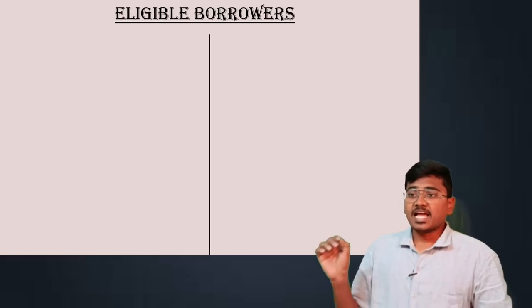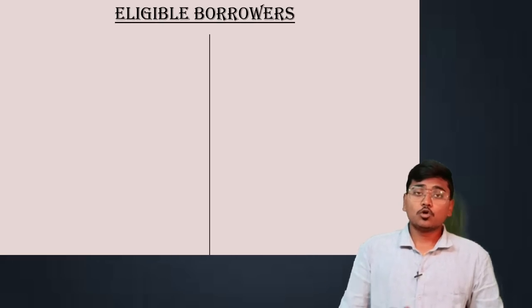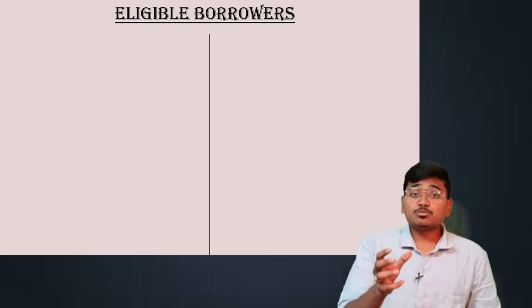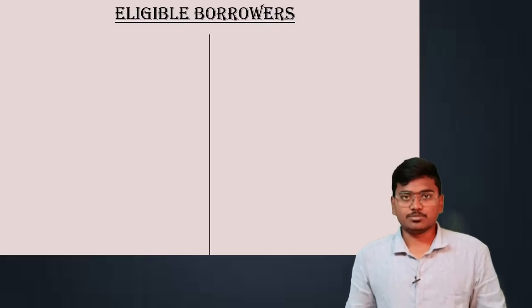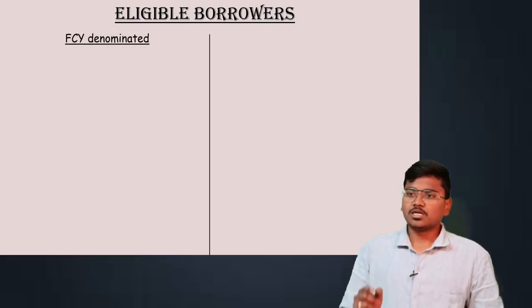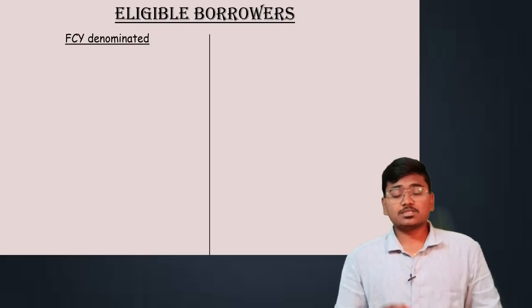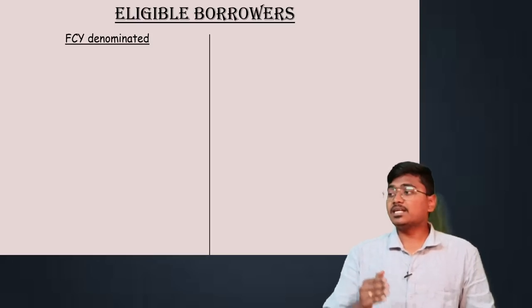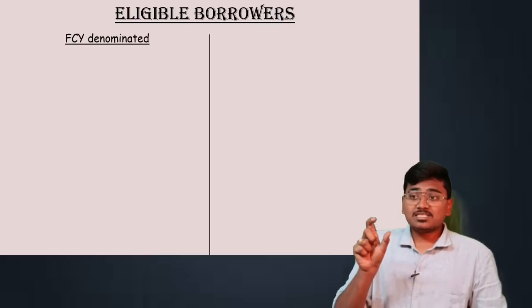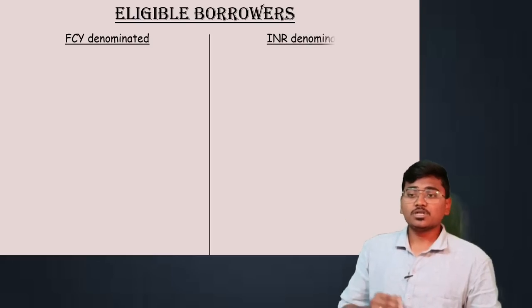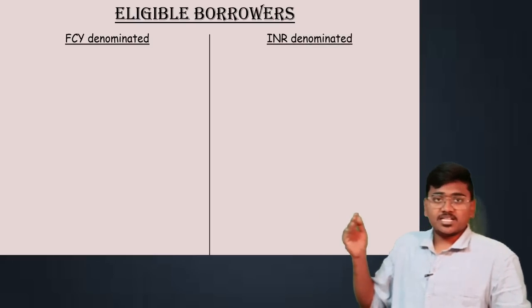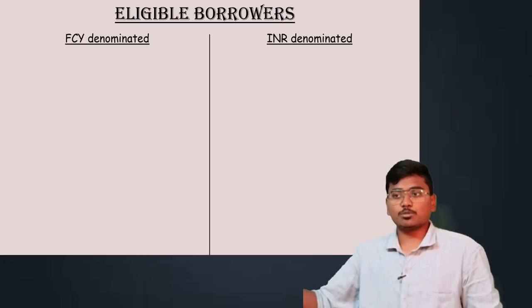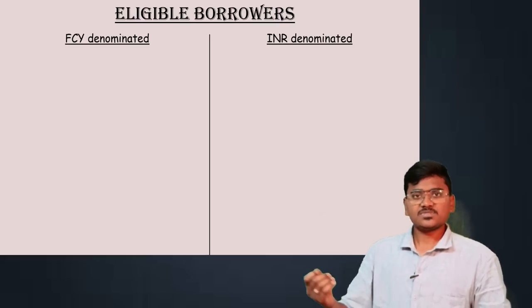Now let us move into eligible borrowers — that means who are the resident entities which can raise ECBs. There are two types of ECBs based on currency: foreign currency denominated ECBs and Indian Rupee denominated ECBs. The eligible borrowers are different for these two types, so let us discuss them separately.